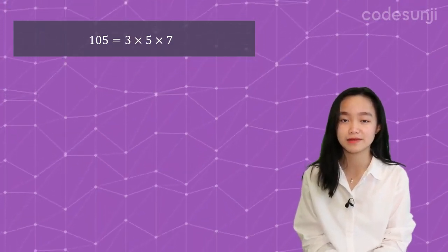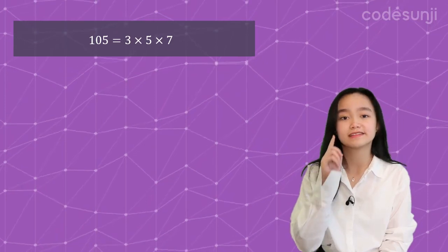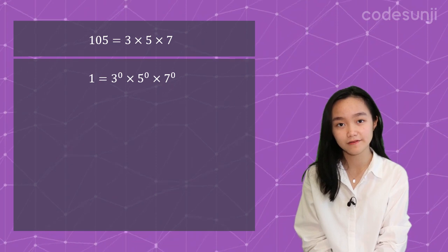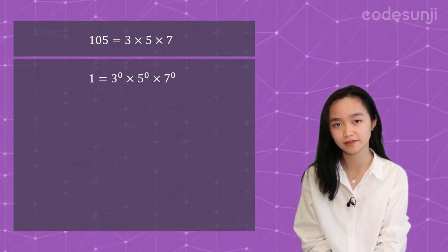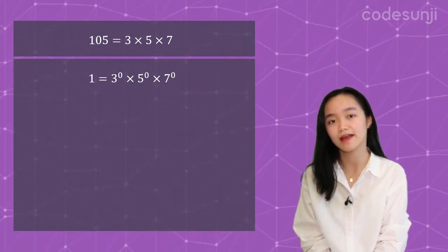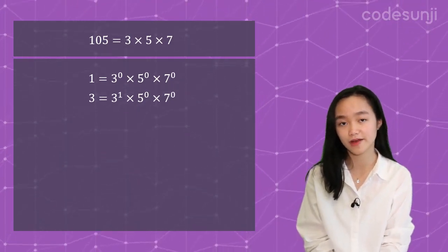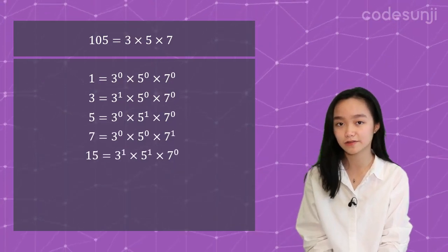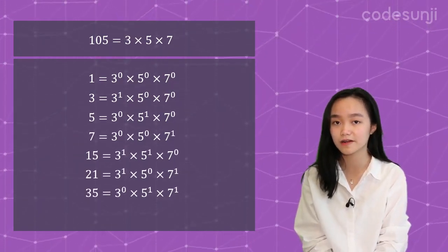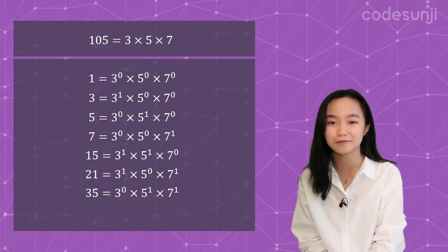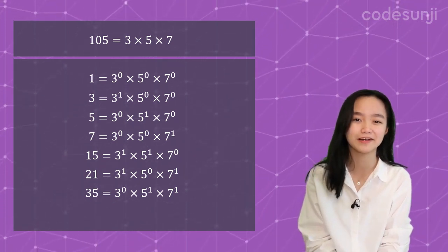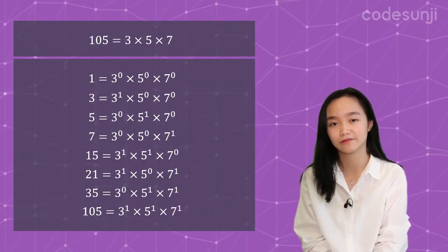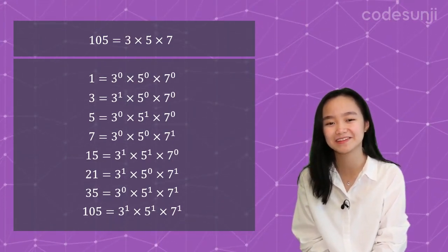Going through the list of factors we made earlier, we can see that there are just different combinations of the prime factors. 1 is equal to 3^0 × 5^0 × 7^0, and 3 is just 3^1 × 5^0 × 7^0, so on and so forth until 35 is equal to 3^0 × 5^1 × 7^1, and 105 is equal to 3^1 × 5^1 × 7^1.